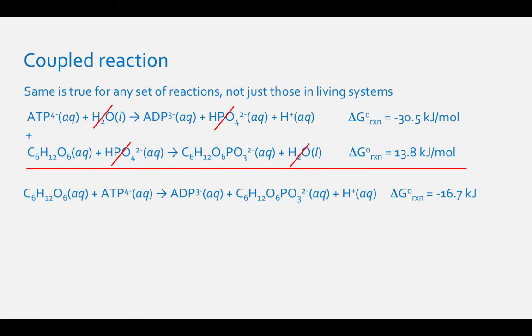C6H12O6 aqueous plus ATP4- aqueous results in ADP3- aqueous plus C6H12O6 PO3 2- aqueous plus H+ aqueous. Standard delta-G of reaction equals negative 16.7 kilojoules.